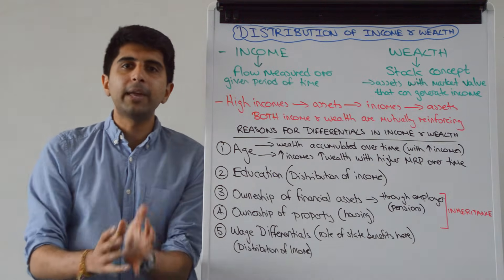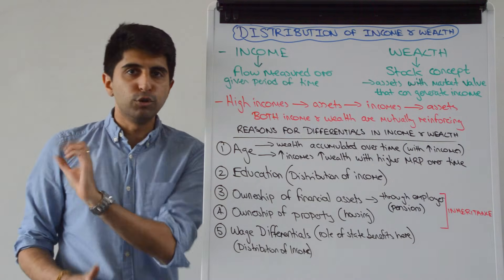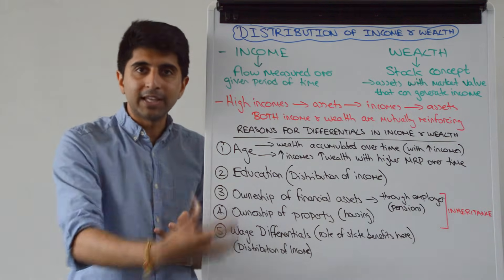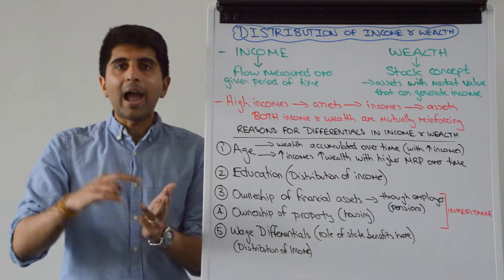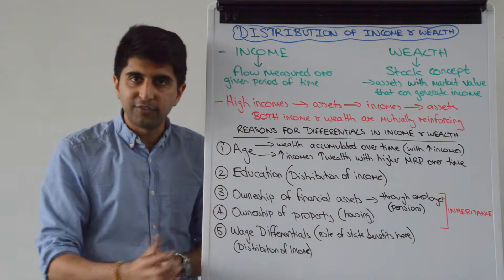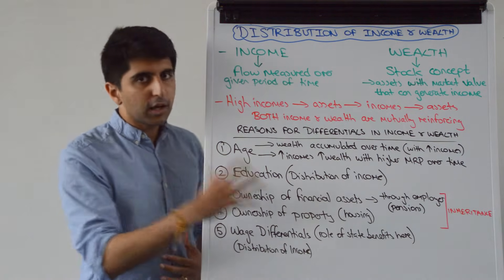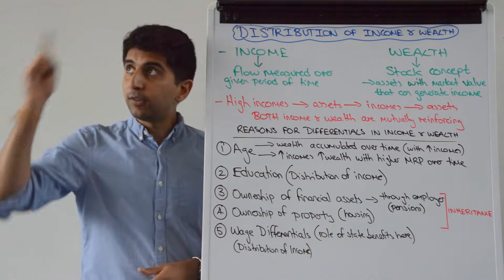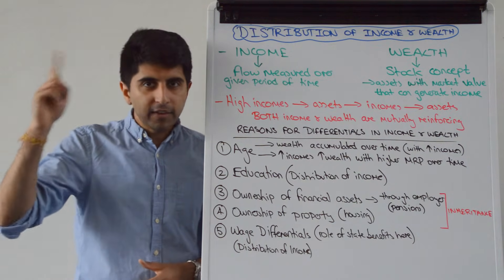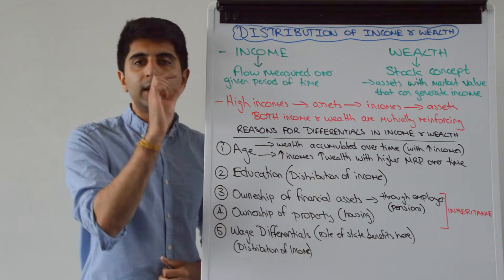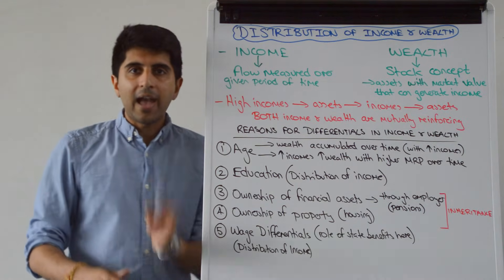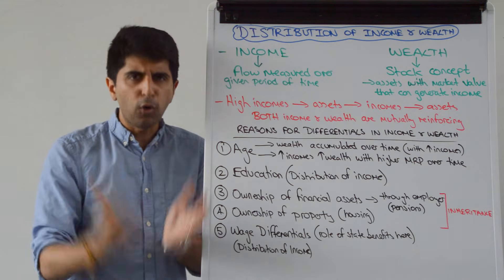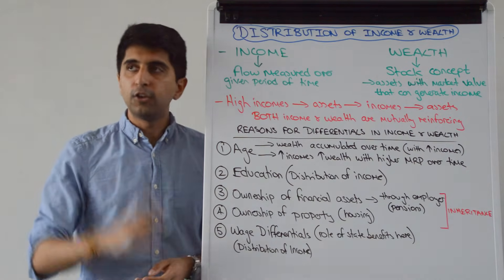It's also important in this topic area to understand crucial differences between equity and equality in the distribution of income and wealth, and the different types of equity — horizontal versus vertical equity. I'm not going to cover those concepts here because I've already covered them in my poverty video in a lot of detail. The link is right above me, so click on that if you want to understand more. Examiners will expect it — it's a very core part of this topic area.